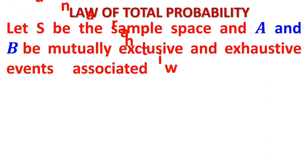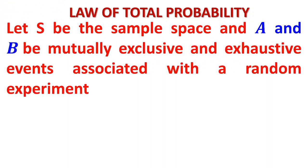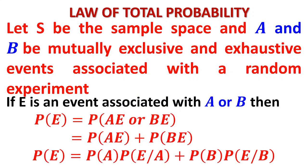Let us look back at the law of total probability. Let S be a sample space, and let A and B be mutually exclusive and exhaustive events associated with a random experiment. We want all the mutually exclusive and exhaustive events connected with the random experiment. There is an event E associated with both A or B. The probability of event E occurring is either it will follow A or it will follow B. Since A and B are mutually exclusive, by the law of addition of probability: P(AE) + P(BE).